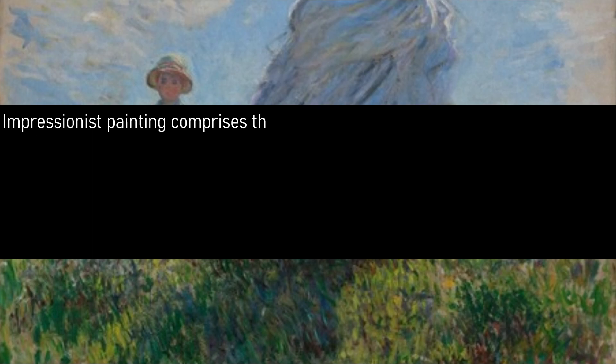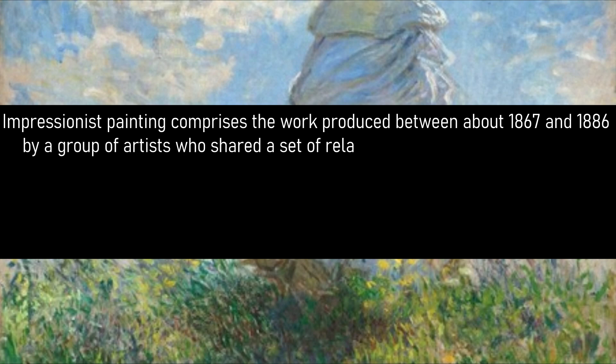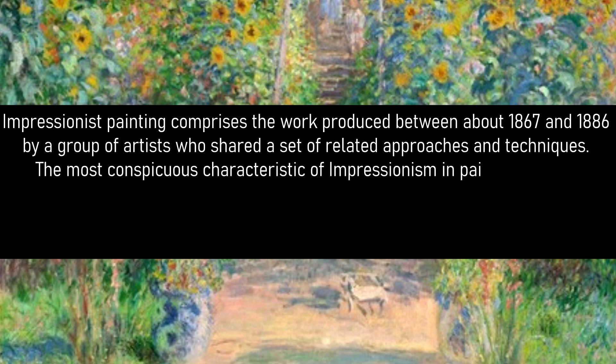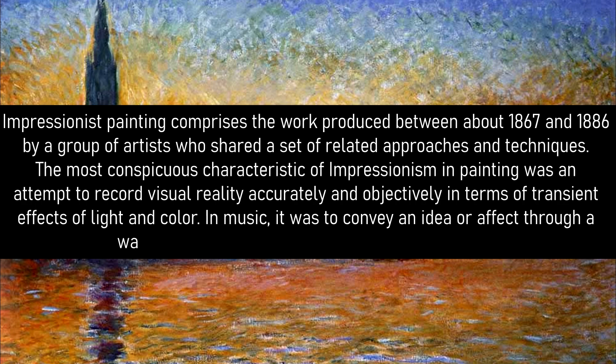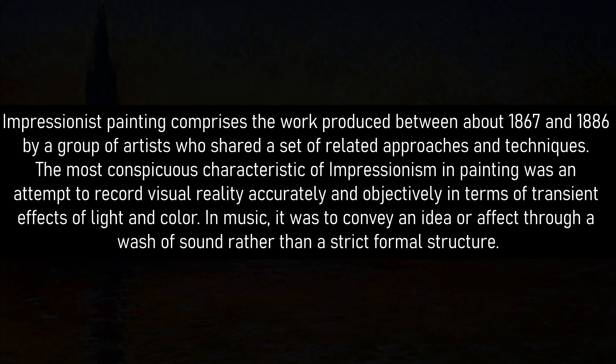Impressionist painting comprises the work produced between about 1867 and 1886 by a group of artists who shared a set of related approaches and techniques. The most conspicuous characteristic of Impressionism in painting was an attempt to record visual reality accurately and objectively in terms of transient effects of light and color. In music, it was to convey an idea or effect through a wash of sound rather than a strict formal structure.